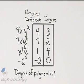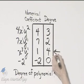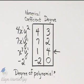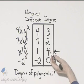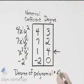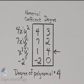What then would be the degree of the polynomial? It's the highest degree of the terms. And that is the highest degree is 4. The degree of the polynomial, then, is 4.